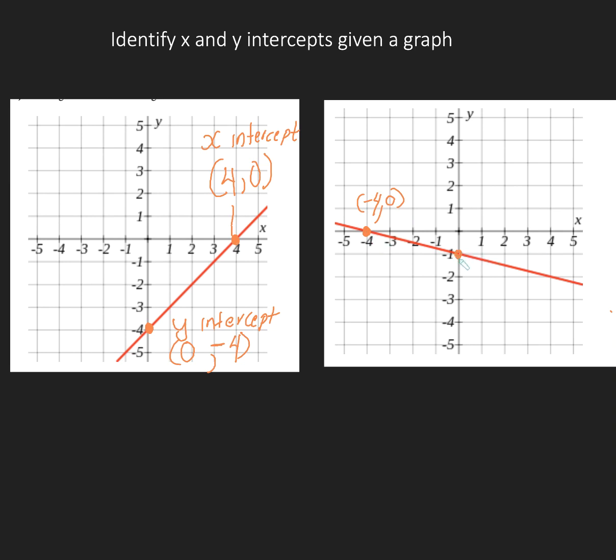Over here this would be my y-intercept. My x value is 0 and the negative 1 represents my y. So this is my x-intercept and this is my y-intercept.